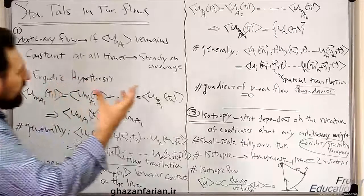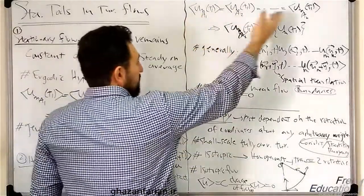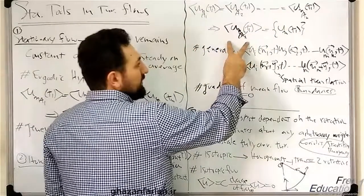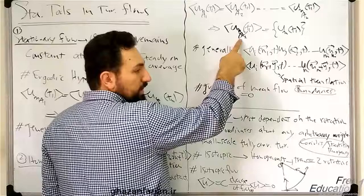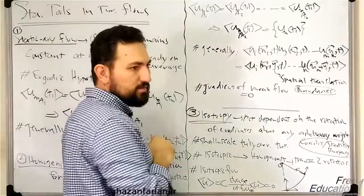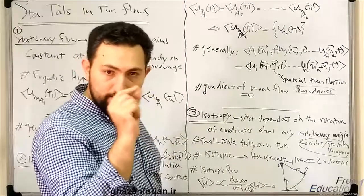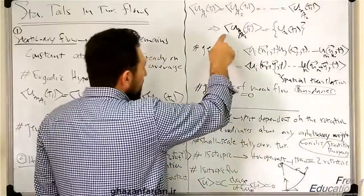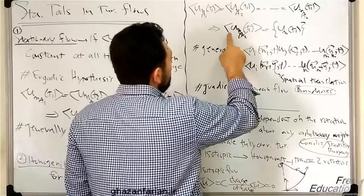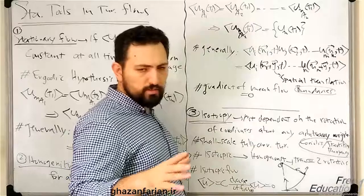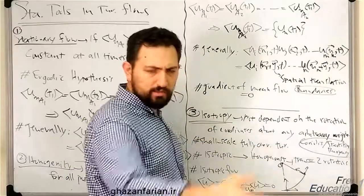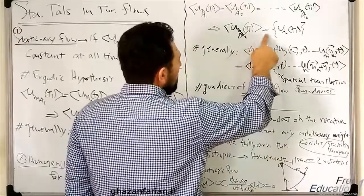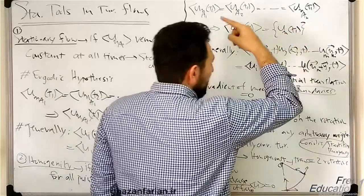This expression results that the ensemble average, you can omit A1 here because the result of ensemble average is not a function of the sampling point. So the ensemble average of x component at any arbitrary point along the line at time T1